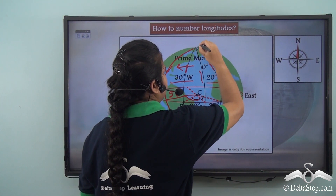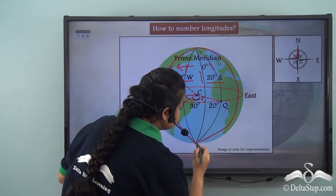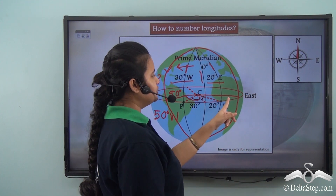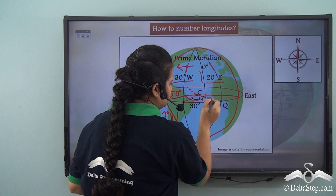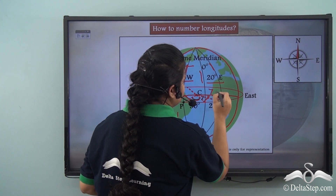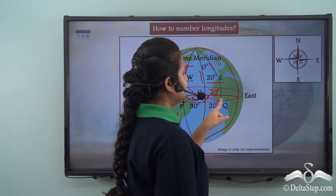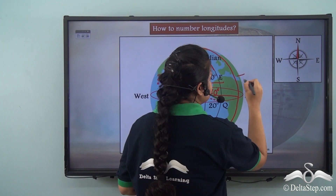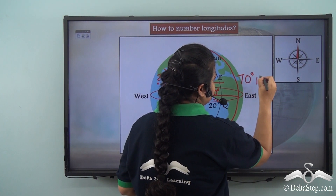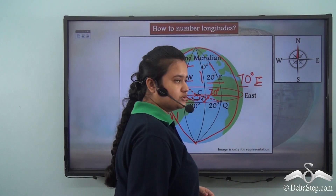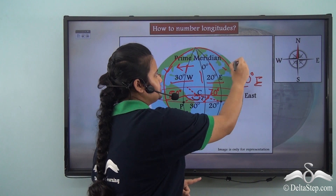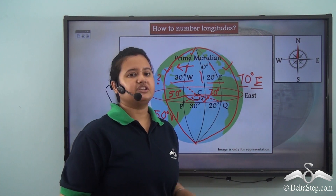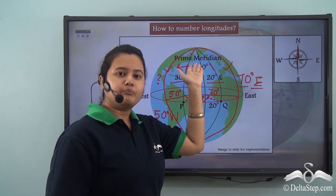Similarly, if we take another longitude in the eastern hemisphere, and suppose the angular distance between this longitude and the prime meridian is 70 degrees, then this particular longitude can be marked as 70 degrees East. This number 70 degrees denotes the angular distance between this longitude and the prime meridian, while E or East denotes the direction in which it lies with respect to the prime meridian.